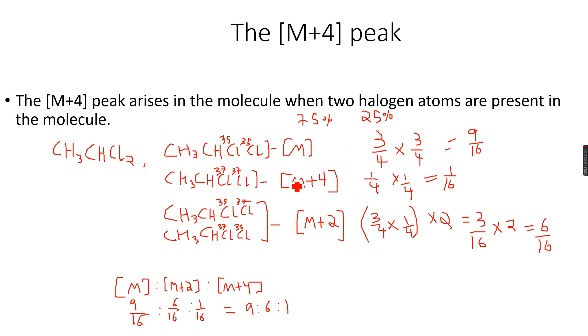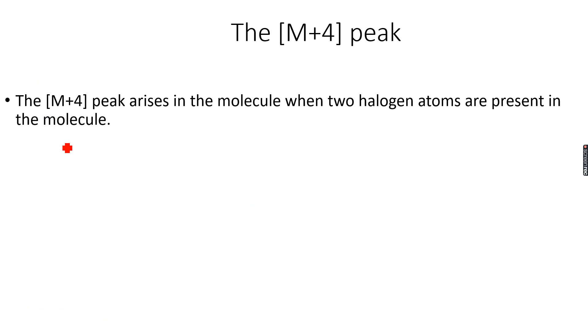So let's do the same for 1,1-dibromoethane. So let's do the same for 1,1-dibromoethane, so we have CH₃CHBr₂.